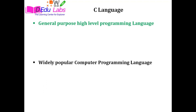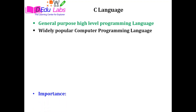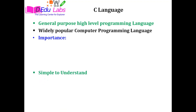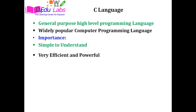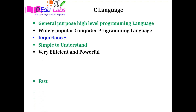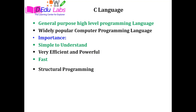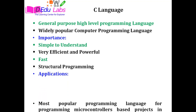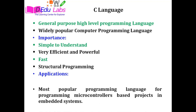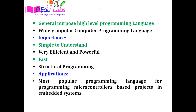C language is a general purpose, high level programming language. It is a widely popular computer programming language. Its importance: it is simple to understand, very efficient and powerful, fast, and it is based on structural programming. In terms of applications, it is the most popular programming language for programming microcontroller based projects in embedded systems.